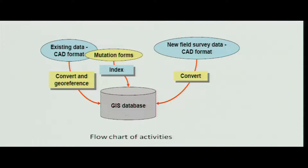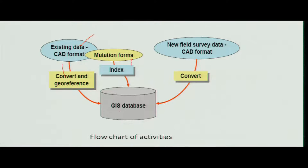The GIS database, which we have seen in the last lecture, shows how to convert existing maps and existing information. They can be created spatially, georeferenced, and stored in the form of a geodatabase. The existing maps need to be scanned — they may be in CAD format — and converted by georeferencing, meaning adding latitude/longitude. Mutation information related to the Record of Rights (ROR) is added, indexed, and created as an attribute.